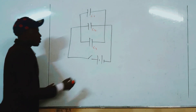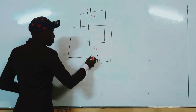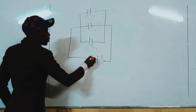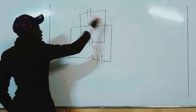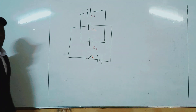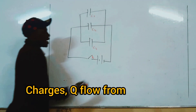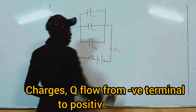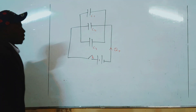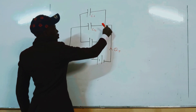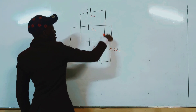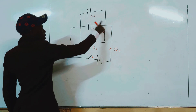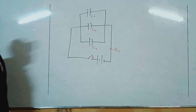When you switch on here, charges — we know charges are electrons — flow from the negative terminal to the positive terminal. When you close the switch, the total charge Q will pass through. But at this junction, some charges will pass through C1, some through C2, and some through C3.